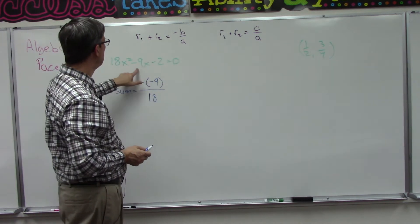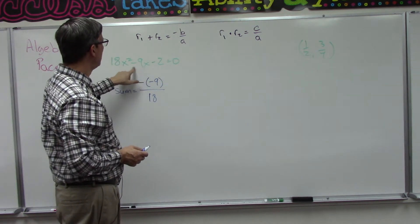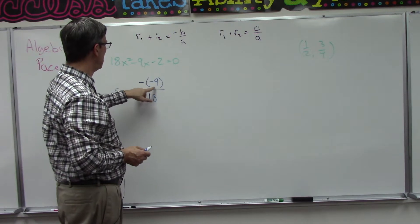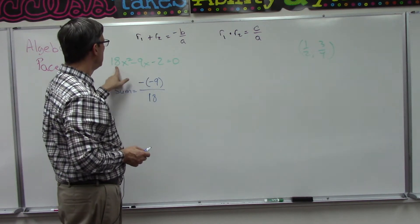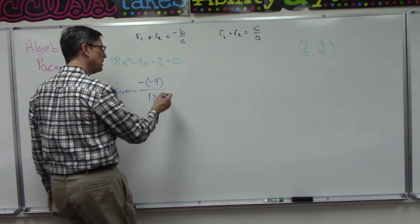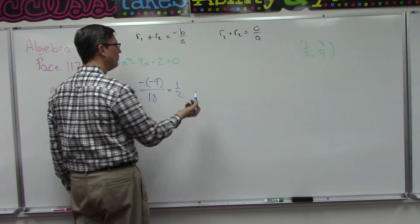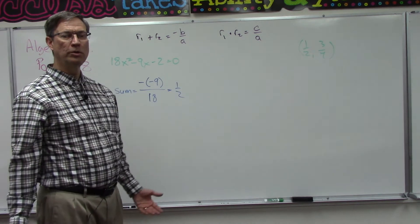So all I did was plug into this formula: the opposite of b. b happened to be negative 9, so we're actually doing positive 9 over a, which is 18. So that's 9 over 18, which is one half. And we're done, that's all you're doing.